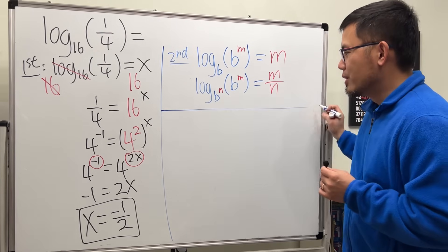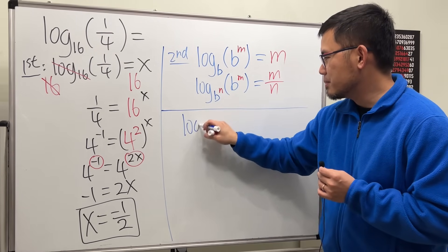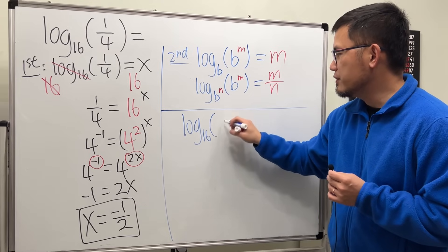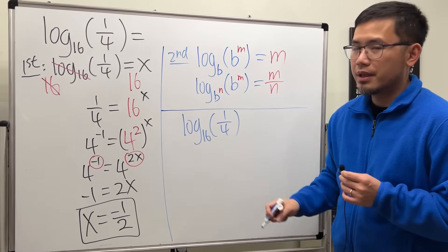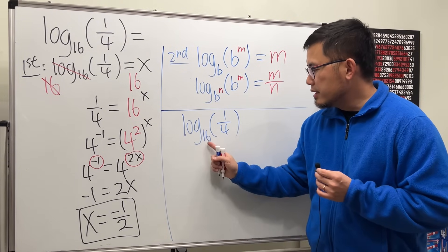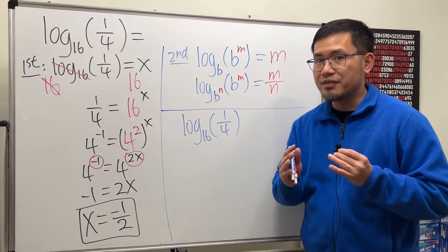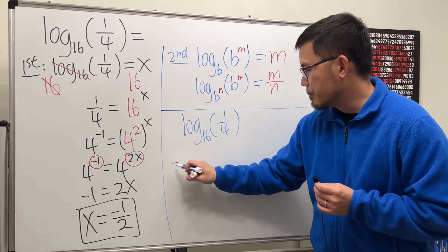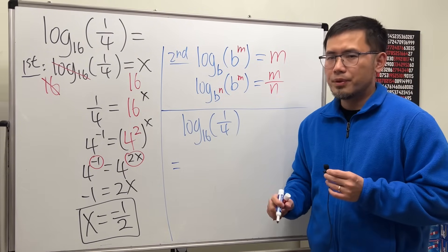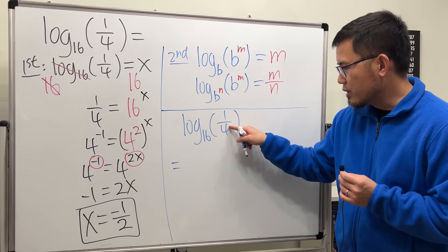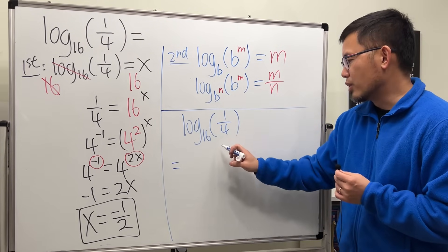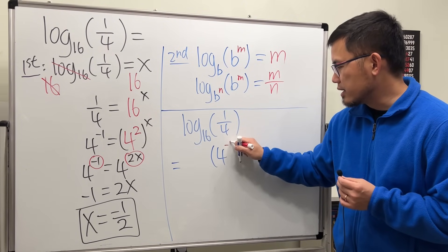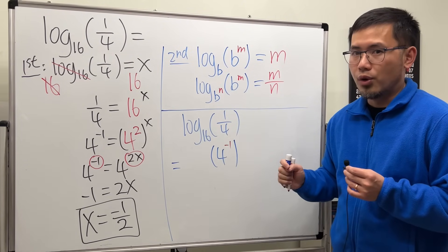So we are looking at log base 16 of 1 over 4. The key is, write this number and that number to have the same base. So for the 1 over 4, we can just bring the 4 up and use negative exponents. So this is the same as 4 raised to the negative 1. And that's for 1 over 4.